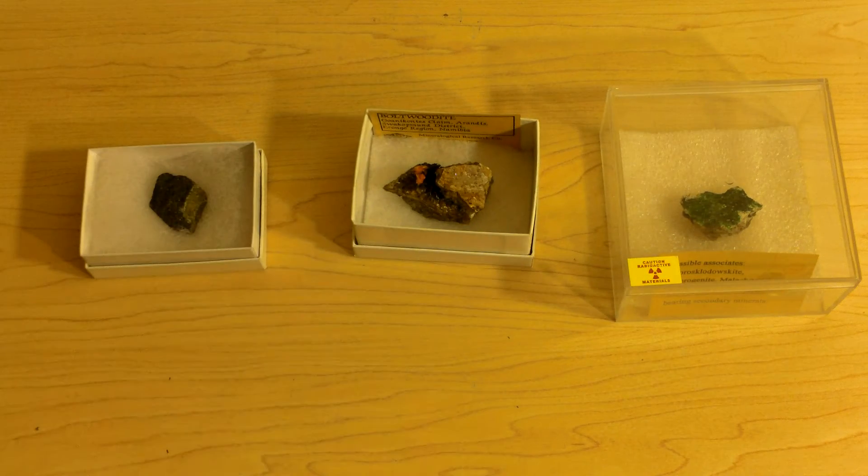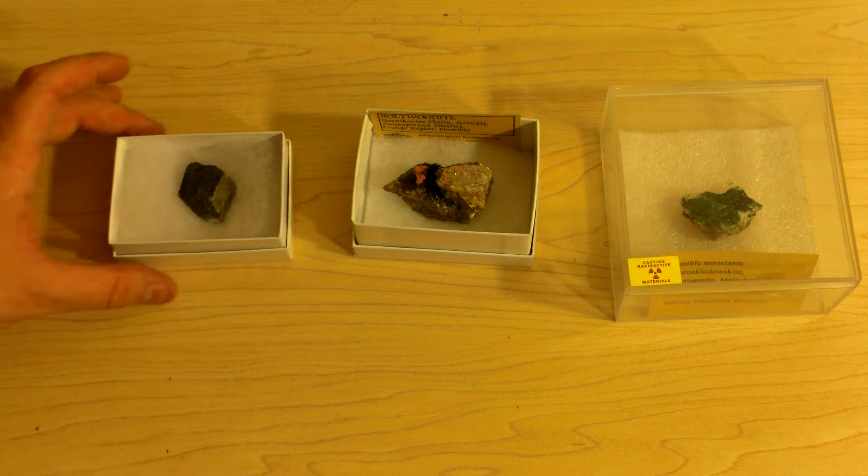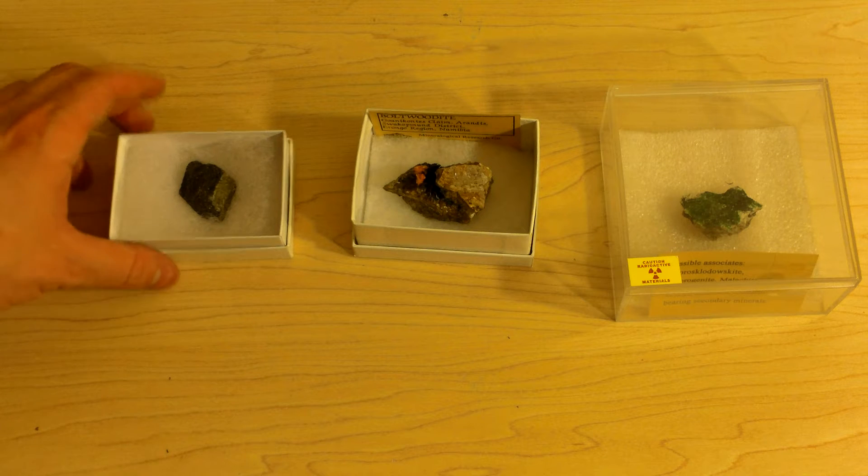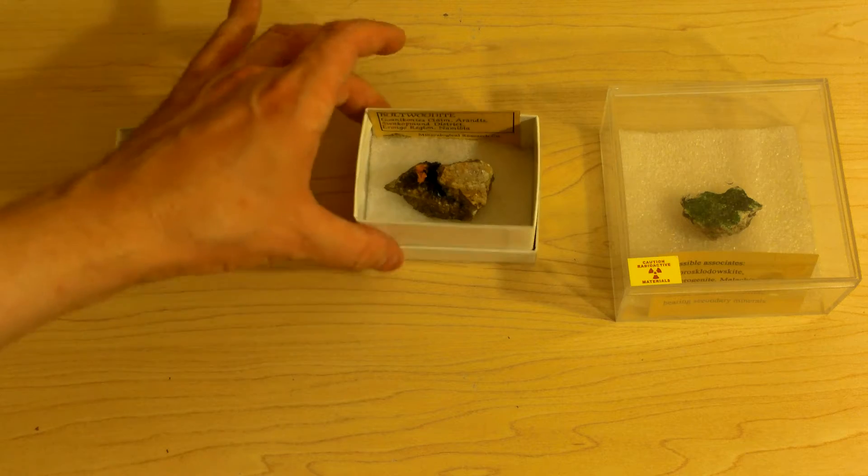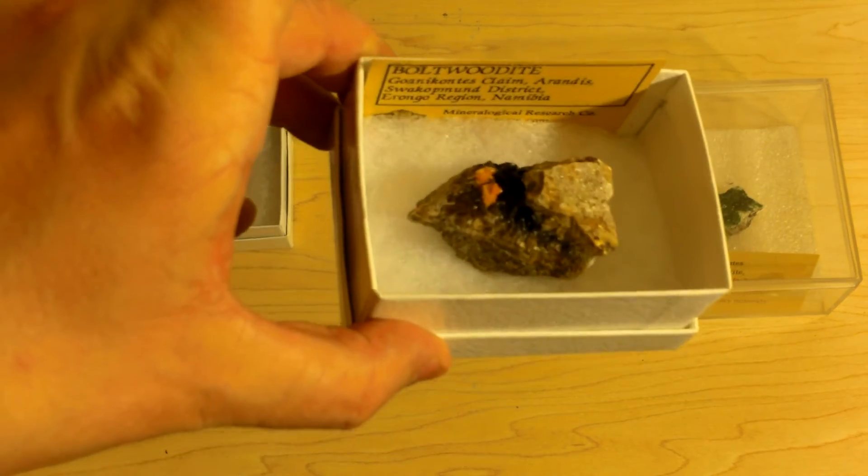So now that I've done that, we're going to start off with these three samples here. This is Schoepite, which is a sample that glows in the dark if you shoot it with a black light. Here's a bit of Boltwoodite. Boltwoodite's quite lovely.